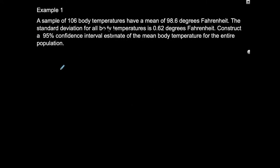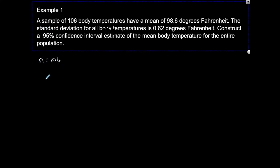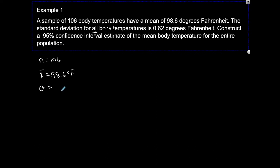Let's look at this example. A sample of 106 body temperatures — so that is our sample size, n equals 106. That sample has a mean, so from the sample the average, x-bar, the sample mean is 98.6 degrees Fahrenheit. The standard deviation for all body temperatures is 0.62 degrees Fahrenheit. This means they give us sigma, the population standard deviation, which is 0.62.